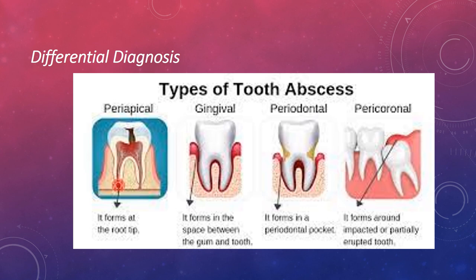In differential diagnosis, there are several abscesses to distinguish: periapical abscess forms at the root apex; gingival abscess forms in the space between the gingiva and tooth; periodontal abscess forms in a periodontal pocket; and pericoronal abscess forms around an impacted or partially erupted tooth.